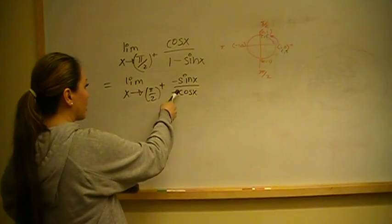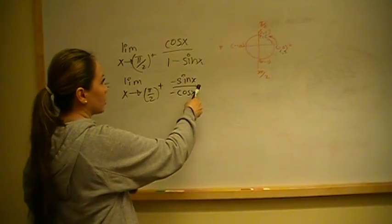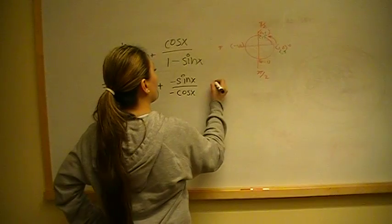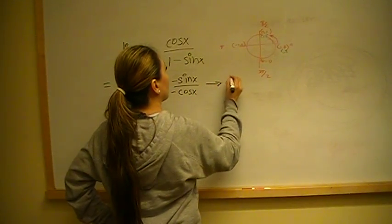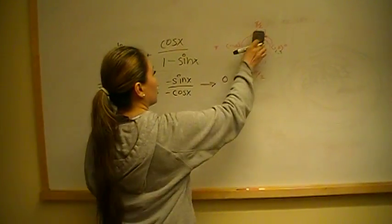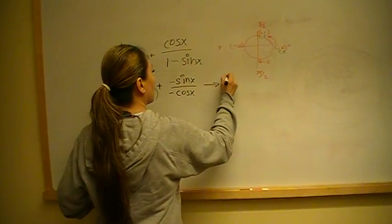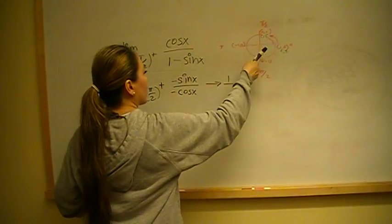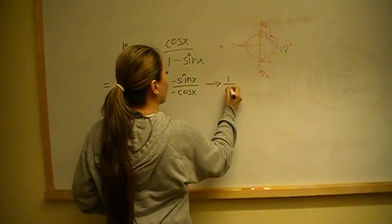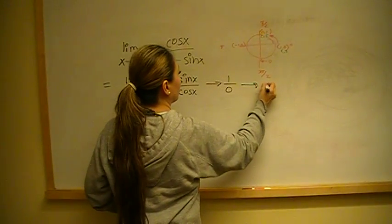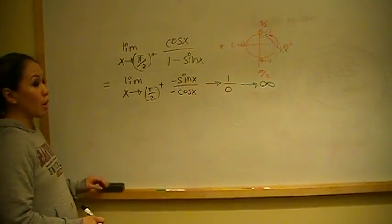So what's happening at the derivatives? Well, here we have sine approaching 0 on the top. Well, excuse me, sine is approaching 1 on the top, and cosine is approaching 0. And 1 over 0 is infinity. That's one way you could have looked at this problem.